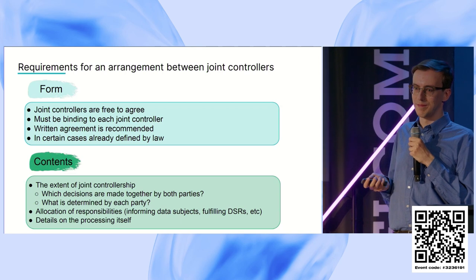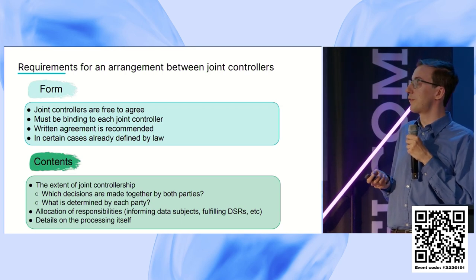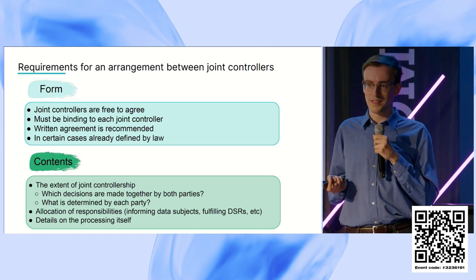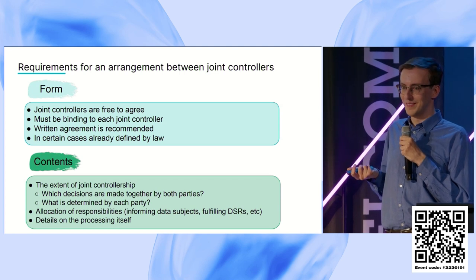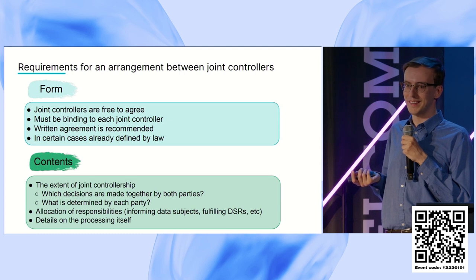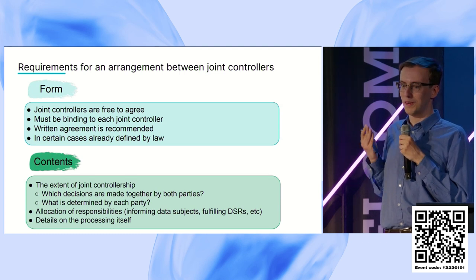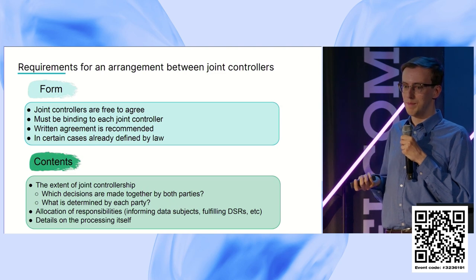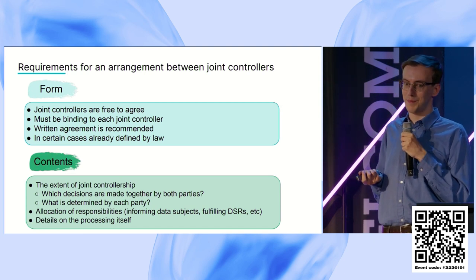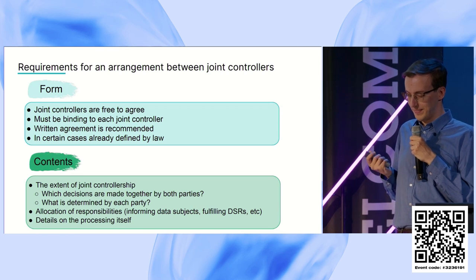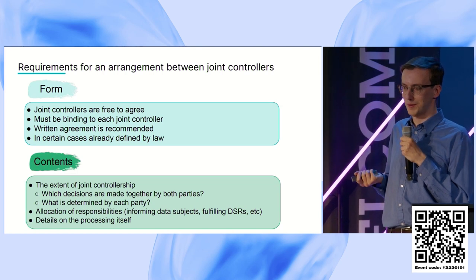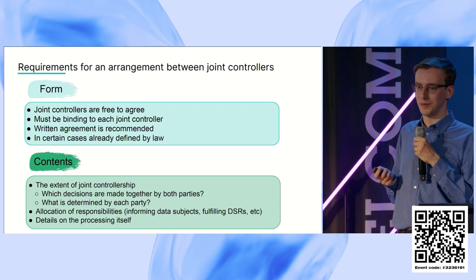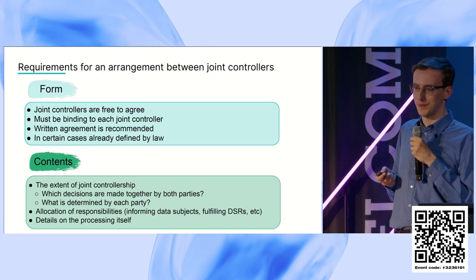Quickly about the form: joint controllers are free to agree on different forms of joint controllership. In theory it could even be a non-written agreement, though I can't imagine that working in practice — how can you clearly define responsibilities or make them available to individuals? The GDPR does, in theory, allow that. In some cases it will be defined by law, but if that doesn't cover all the necessities, it wouldn't be enough just to be defined by law.